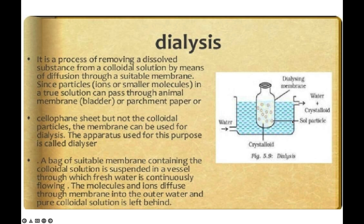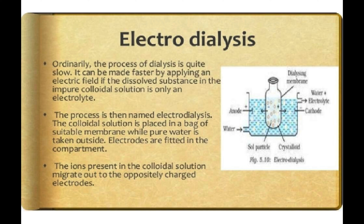Electrodialysis speeds up the slow dialysis process by applying an electric field to the impure colloidal solution. The colloidal solution is placed in a bag of suitable membrane with pure water outside, and an anode and cathode are fitted to the compartment. Ions in the colloidal solution migrate towards the oppositely charged electrode — negatively charged colloids move towards the anode, and positively charged particles move towards the cathode — leaving the purified colloidal solution inside.